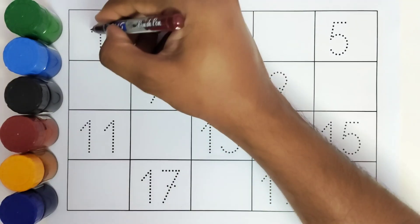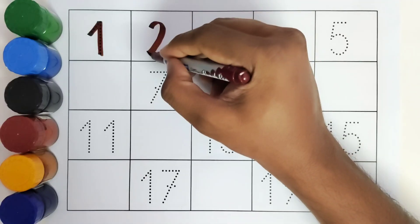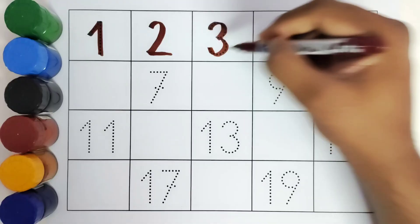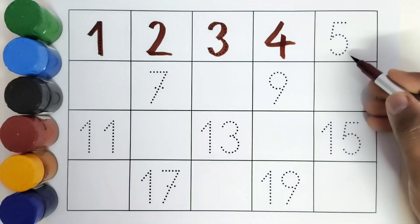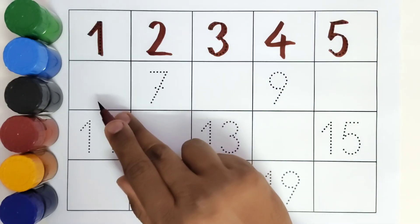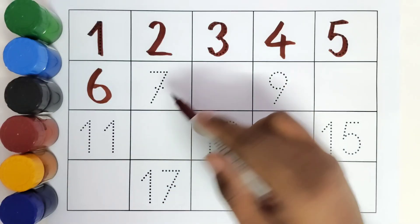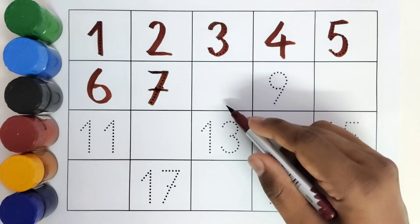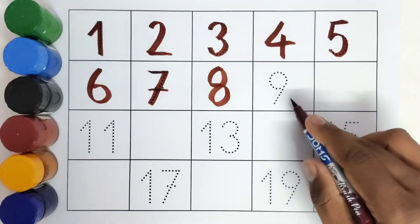What is this? White. What comes after five? Six. This is? Seven. What comes after seven? Eight. This is? Nine.